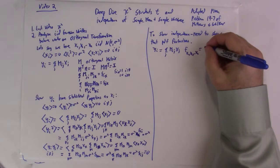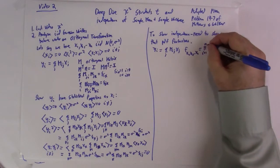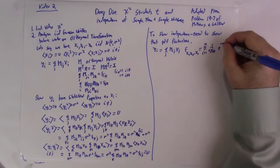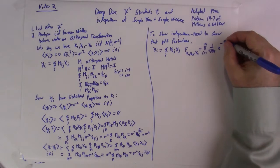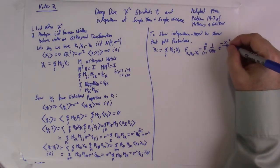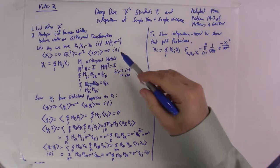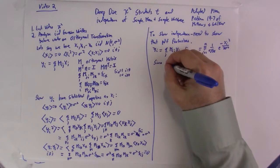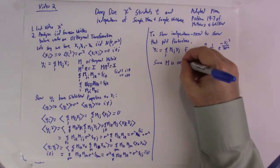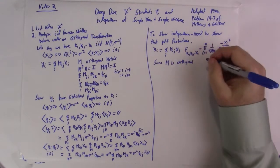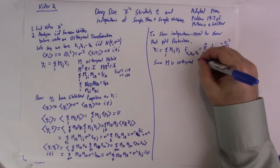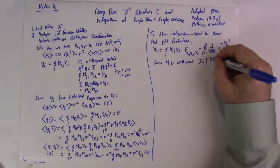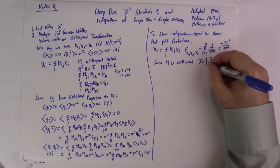The joint PDF equals the product from i=1 to n of (1 over sigma times square root of 2pi) times e to the minus xi squared over 2 sigma squared. Remember, we're working with variables that have mean zero. Now, since M is orthogonal, the Jacobian — defined as the determinant of the partial derivatives of the x variables with respect to the y variables — equals 1.